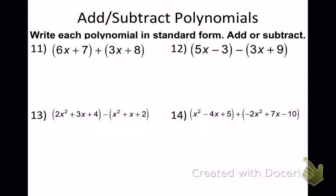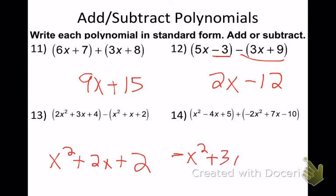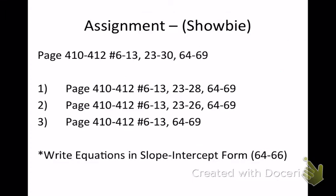Let's check the answers. Number 11: 9x plus 15 — correct. Number 12: 5x minus 3x is 2x, and negative 3 minus 9 gives negative 12, so 2x minus 12. Number 13: x-squared plus 2x plus 2. Number 14 is also correct. Here's your assignment.